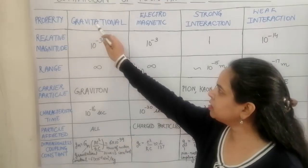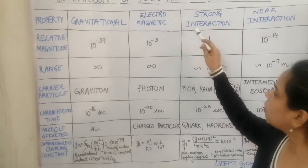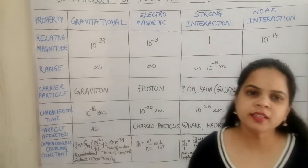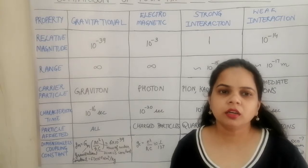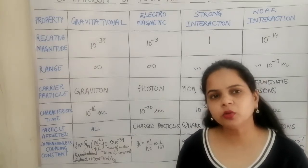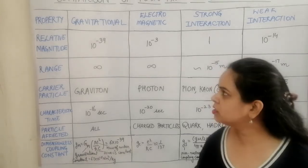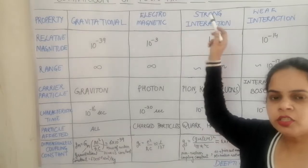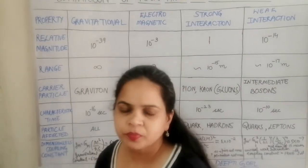There is gravitational interaction, electromagnetic interaction, strong interaction, and weak interaction. In our unified approach of the universe, there are basically four types of interactions: gravitational interaction, electromagnetic interaction, strong interaction, and weak interaction.